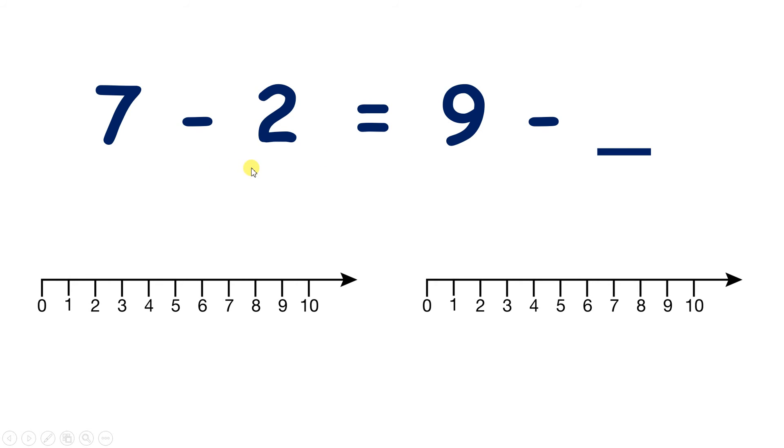Now we've got 7 minus 2 equals 9 minus something. So if I'm on 7 and I go back 1, 2, that gives me 5. So 7 minus 2 is 5.